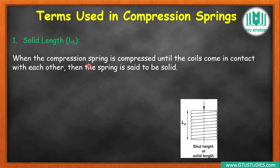When the compression spring is compressed until the coils come in contact with each other, then the spring is said to be solid. If we calculate that length, suppose one coil has a diameter d, then the height of one coil is the thickness (diameter) of the wire. So the solid length is the number of coils multiplied by the wire diameter.